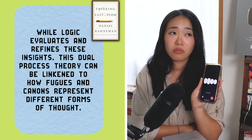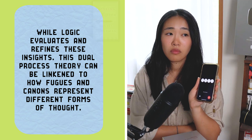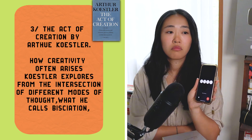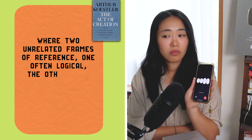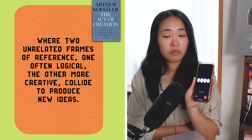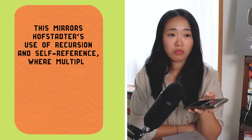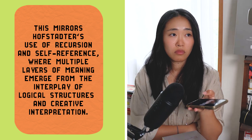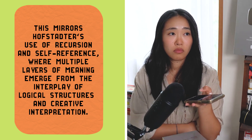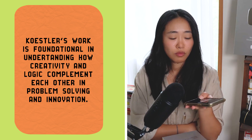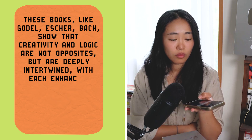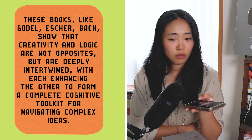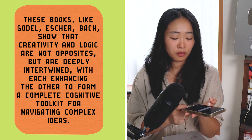This dual-process theory can be likened to how fugues and canons represent different forms of thought. Three: The Act of Creation by Arthur Koestler. Koestler explores how creativity often arises from the intersection of different modes of thought — what he calls 'bisociation' — where two unrelated frames of reference collide to produce new ideas, mirroring Hofstadter's use of recursion and self-reference. These books, like Gödel, Escher, Bach, show that creativity and logic are not opposites but deeply intertwined, forming a complete cognitive toolkit for navigating complex ideas.